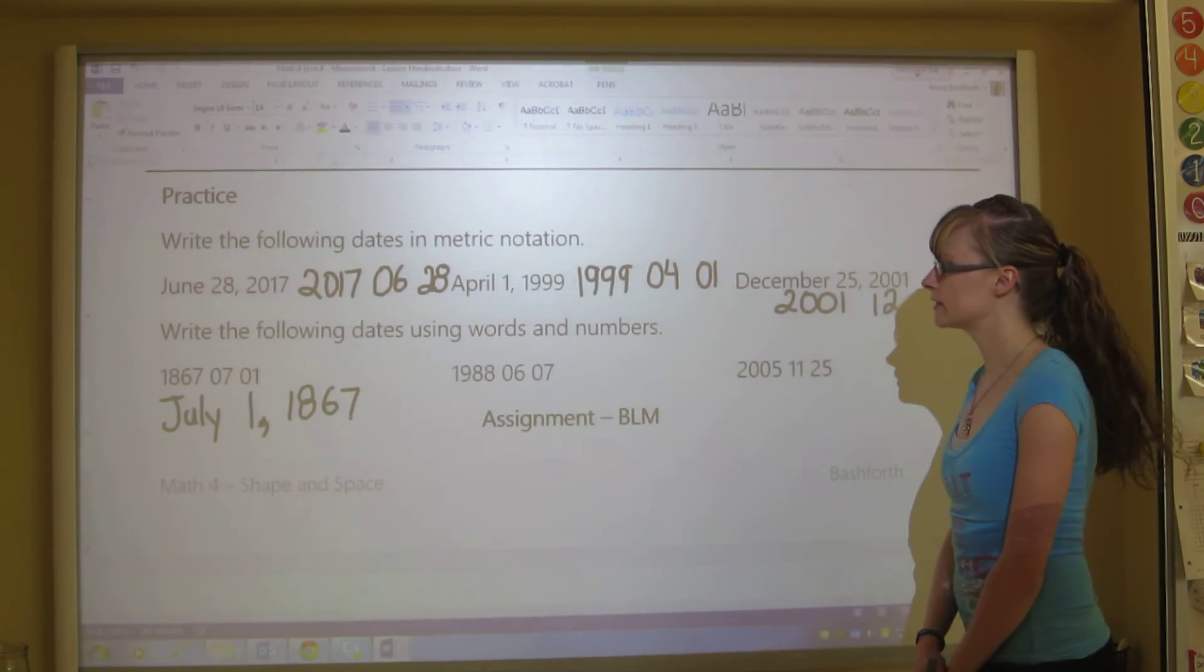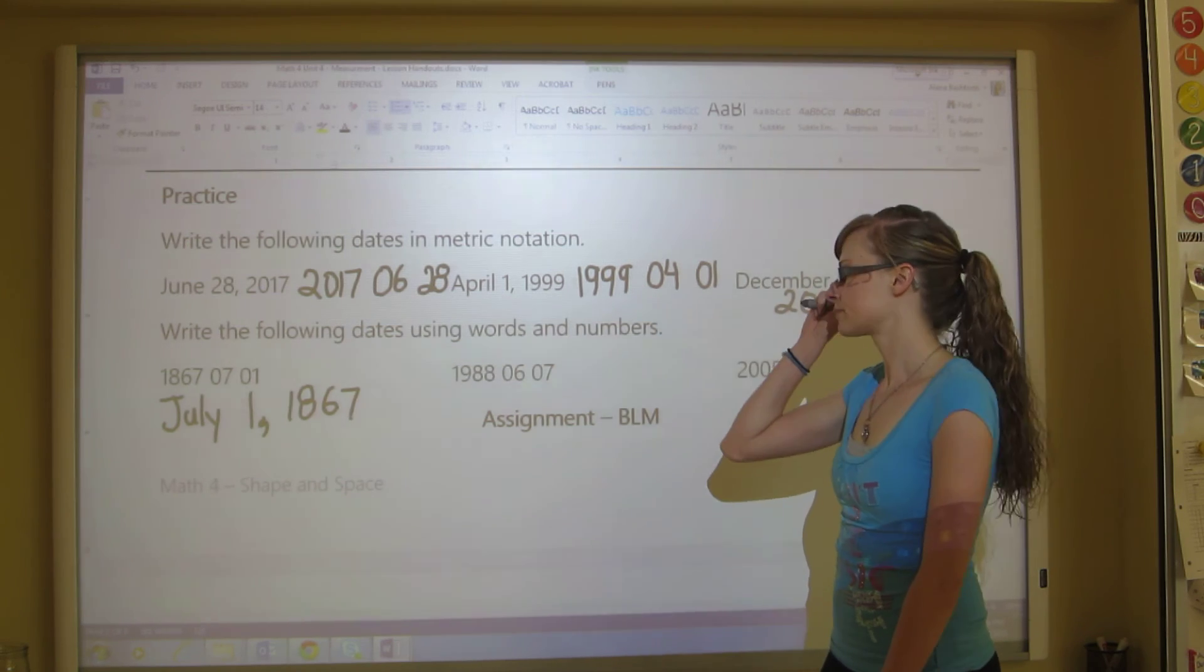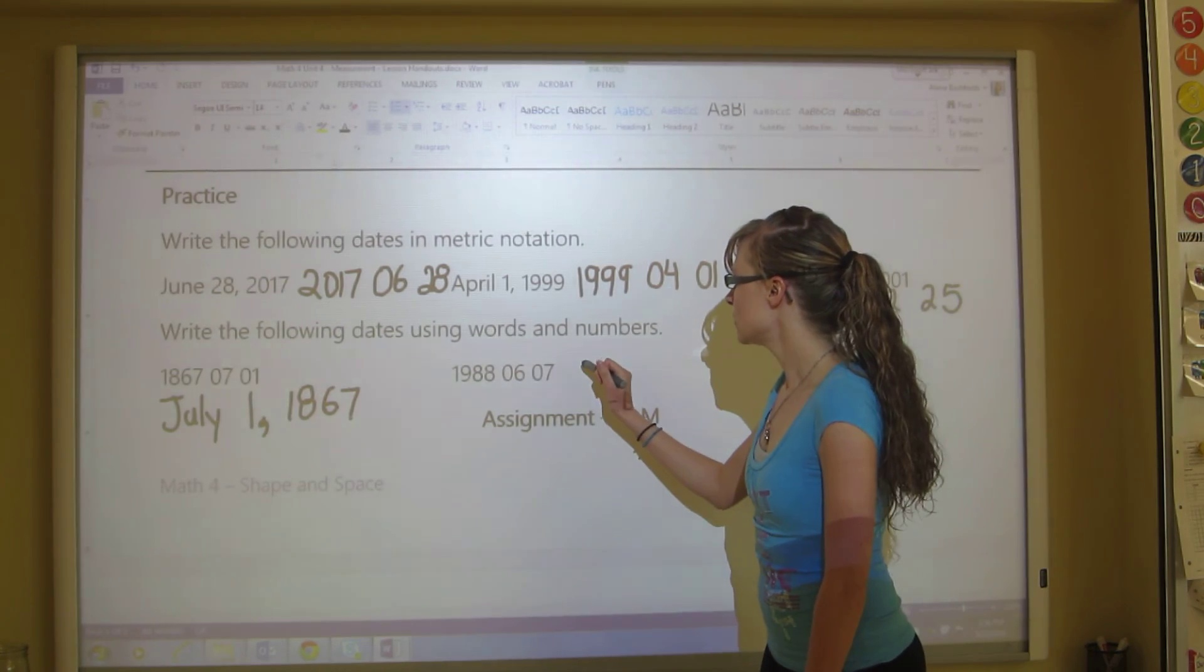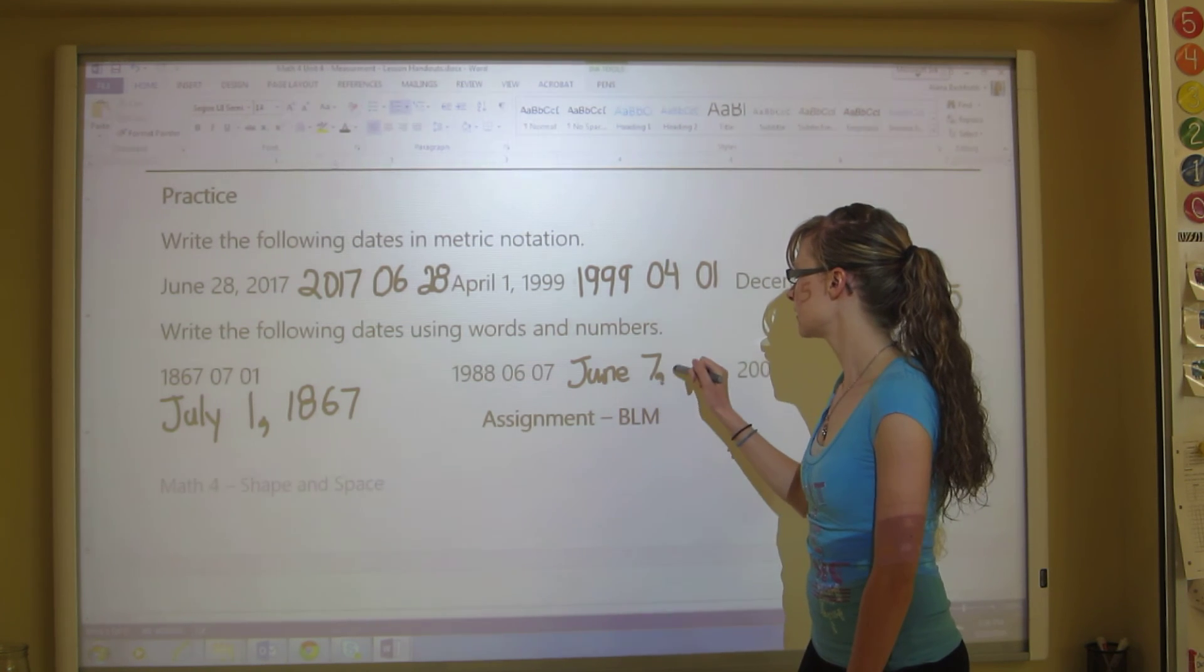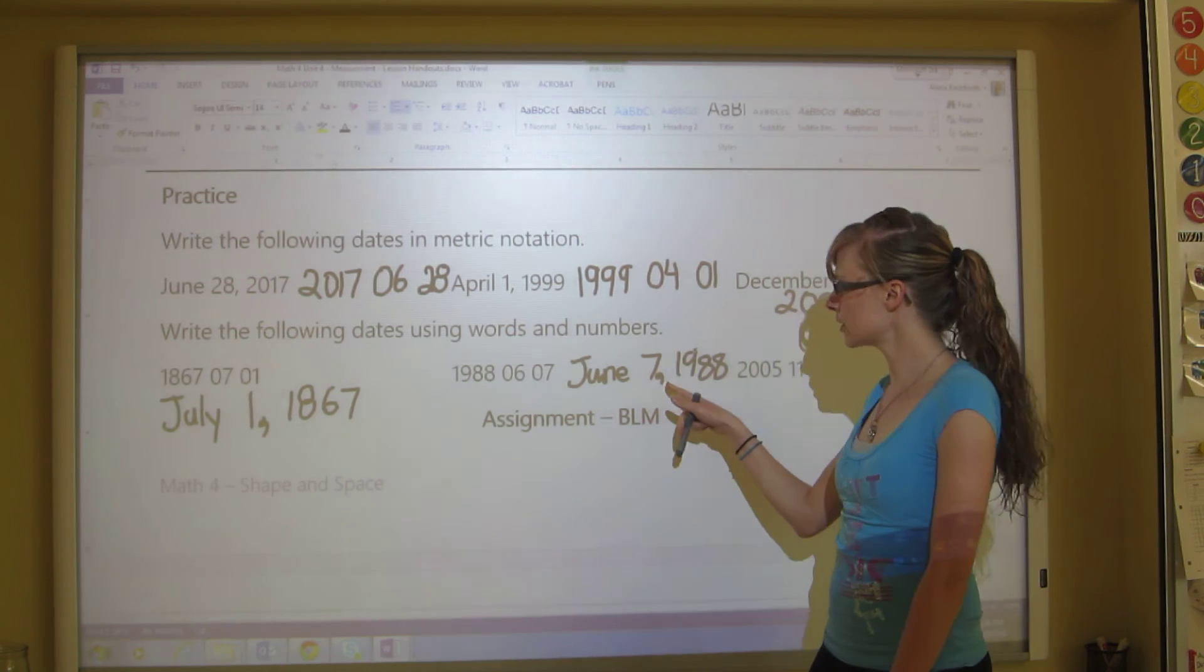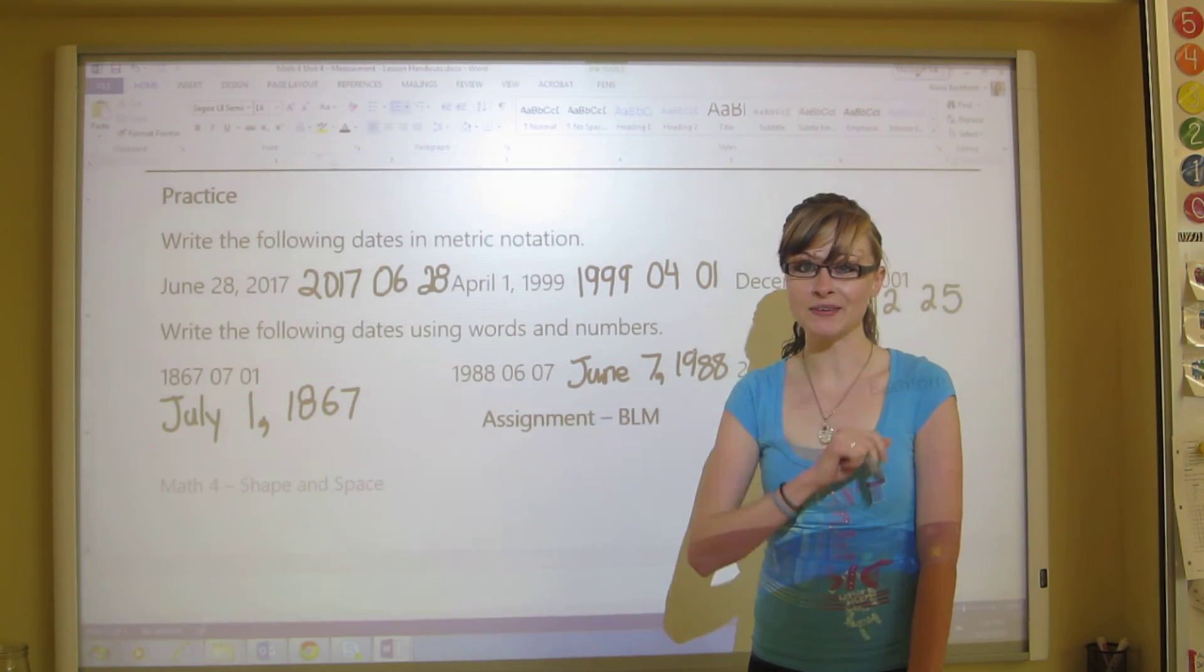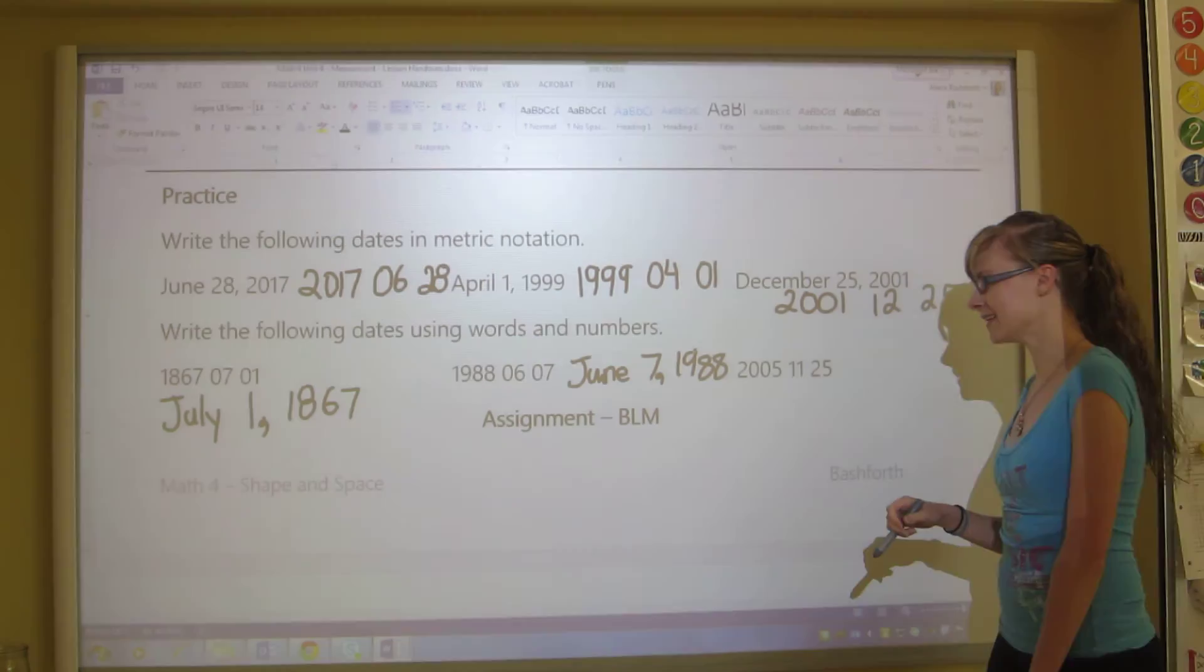So you should be finished these questions. And so we've got this one right here. We've got 1988, and the sixth month is June, and the date is 7th. So we write June 7th, 1988. Don't forget your comma, and don't forget that you don't need that zero in front of the seven. A little side note, this date, I was one day old. My birthday was the day before that.